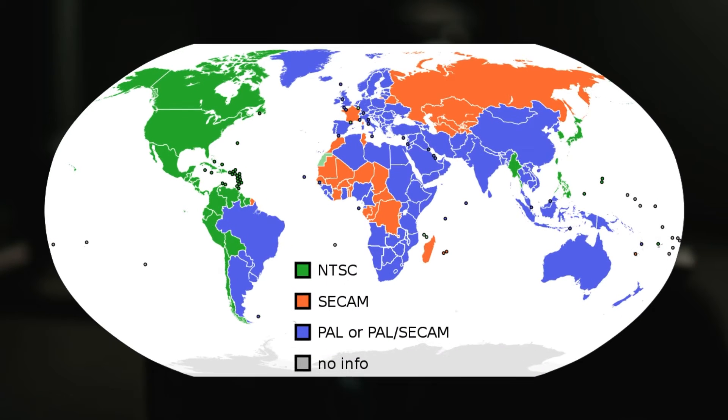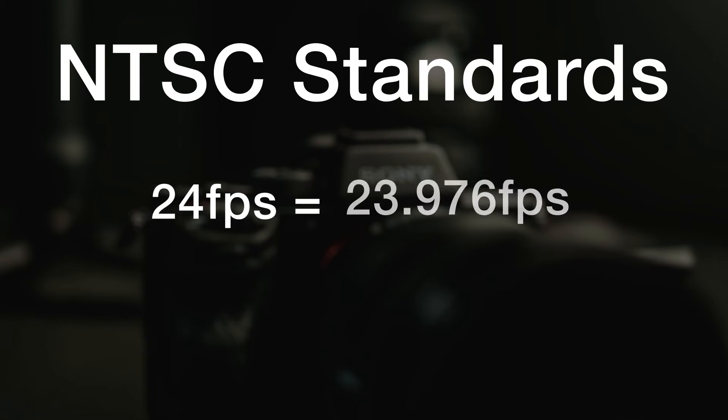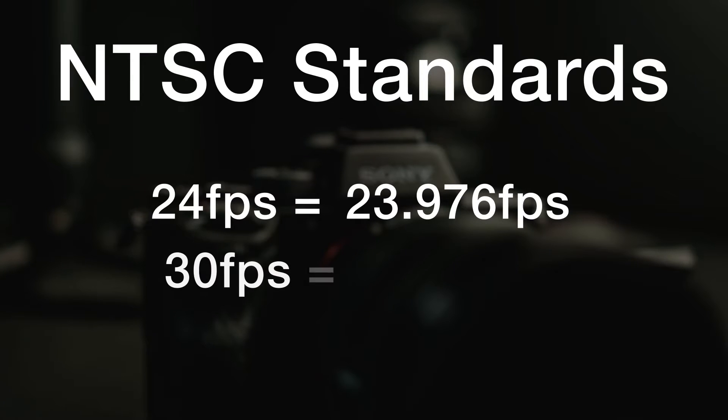Now a quick note here: this does vary a bit depending on where you live. Different regions and countries have different standards for transmitting video, the primary ones being NTSC and PAL. In North America and the United States, we use NTSC standards. So when I say 24 frames per second, what I really mean is 23.976 frames per second — it's just quicker to say 24. Similarly, when I say 30 frames per second, I'm actually referring to 29.97 frames per second.